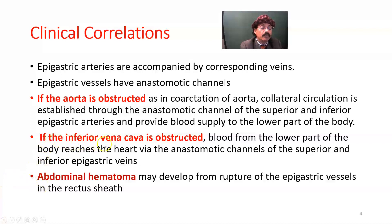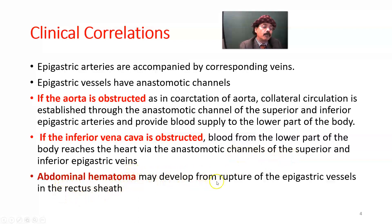On the other hand, if the inferior vena cava is obstructed, blood from the lower part of the body reaches the heart via the anastomotic channel of the superior and inferior epigastric veins. Abdominal hematoma may also develop from rupture of an epigastric vessel or its anastomosis — for example, if a person standing behind a horse receives a kick, that may lead to an intra-abdominal wall hematoma due to rupture of the epigastric vessels or their anastomosis.